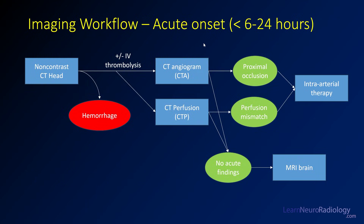In acute onset stroke, particularly within the first six hours, most places start with a non-contrast CT of the head. If patients have hemorrhage, you know the diagnosis and manage accordingly. If there's no hemorrhage, they'll decide whether to start intravenous thrombolysis — TPA or TNK — and then move on to CT angiogram or CT perfusion, sometimes both. If those show no acute findings, you'll proceed to MRI. But if the CTA shows a proximal occlusion and there's a perfusion mismatch, the patient is likely a candidate for intraarterial therapy.